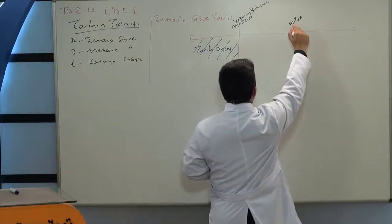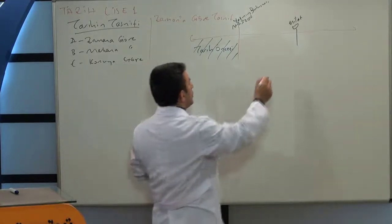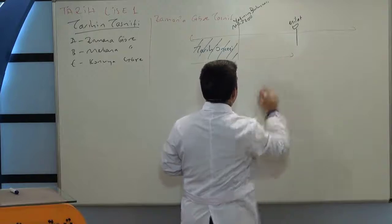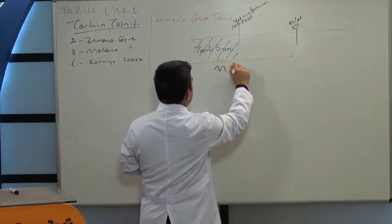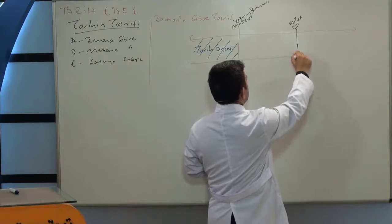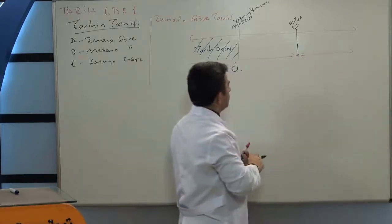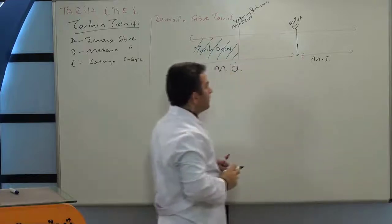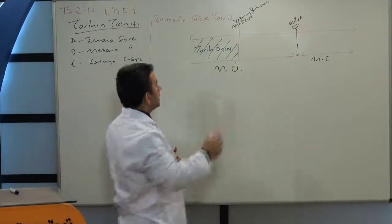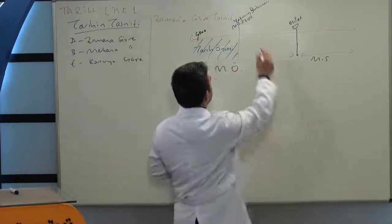Milat nedir? Milatta sıfır kabul edilen Hazreti İsa'nın doğumudur. Hazreti İsa'nın doğumunu biz milat diyoruz. Milada kadar ki döneme genel olarak milattan önceki diyoruz; M.Ö. şeklinde de ifade edilebilir. Buradan sonraki döneme ise milattan sonraki diyoruz. Milattan önceki tarihler milada doğru yaklaştıkça küçülerek gelirler.